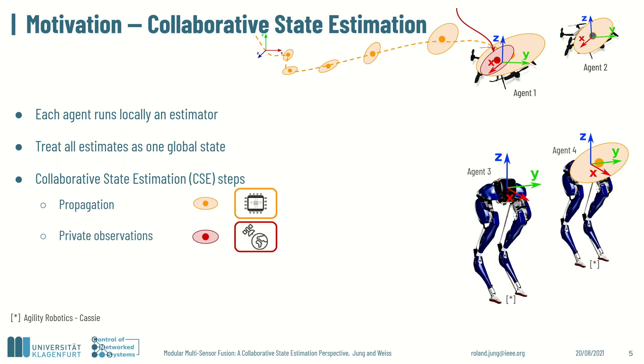State propagation steps are advancing the estimates in time, based for instance on control input encoders or an IMU, and are held in orange. Private observations are correcting estimates based on local exteroceptive sensor readings, for instance GPS measurements, and are held in red. And joint observations are referring sensor readings directly or indirectly to multiple agents estimates and are held in blue. Those can be various relative sensor measurements between agents, for instance range, bearing, relative pose, etc.